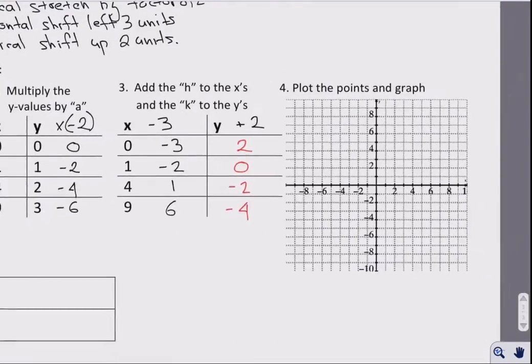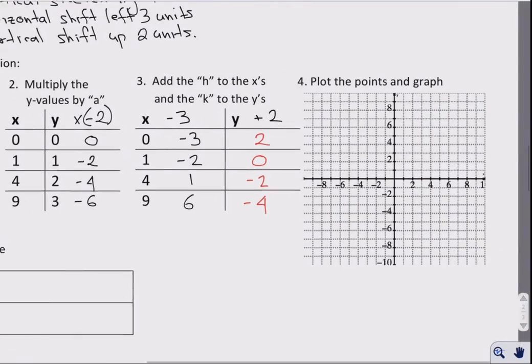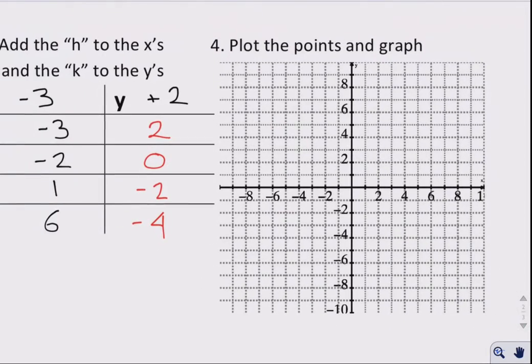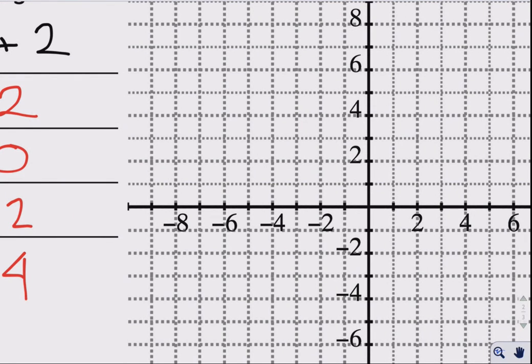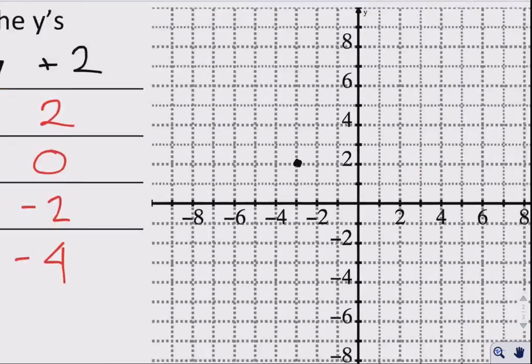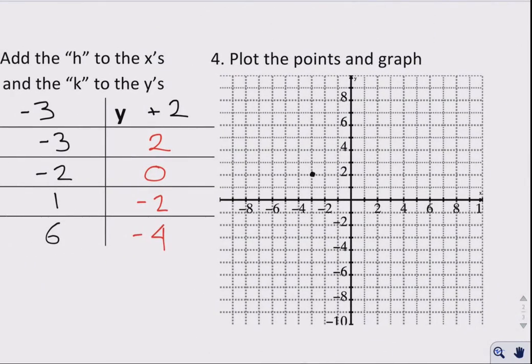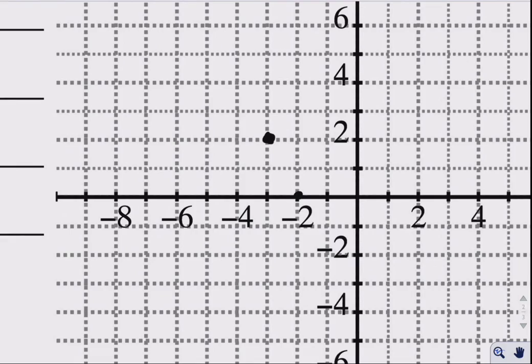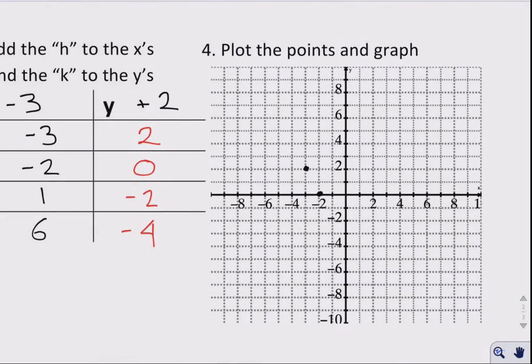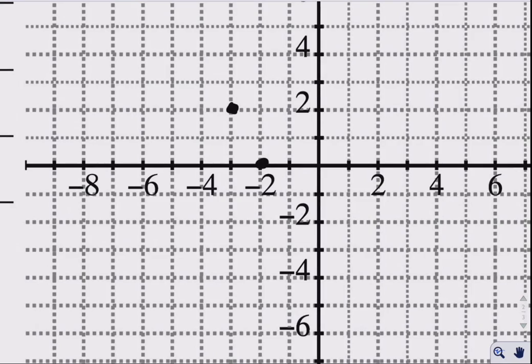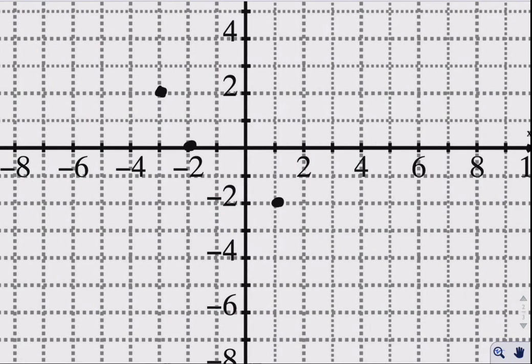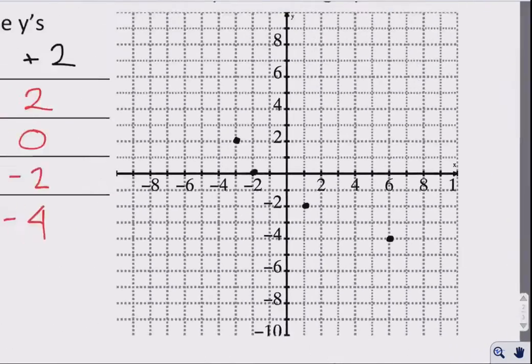And there you have it. Those are our values that we're going to start to sketch. So we start off at negative 3 and 2, which is going to bring me right over here. And then we have negative 2 and 0, which is going to bring me right over here. 1 and negative 2, right over here. 6 and negative 4, so 6 over here, negative 4 is going to be over here.